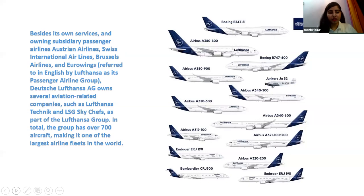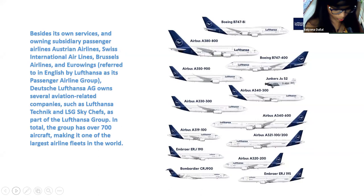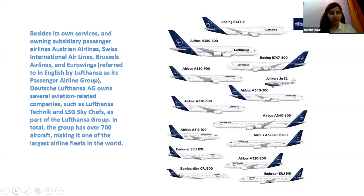Besides its own services and subsidiary passenger airlines, Lufthansa has tie-ups with different airlines such as Austrian Airlines, Swiss International Airlines, Brussels Airlines, and Eurowings — collectively referred to as the passenger airline group. Lufthansa also owns several aviation-related companies such as Lufthansa Technik and LSG Sky Chefs as part of the Lufthansa Group.